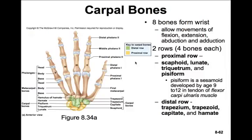There are eight different bones that form the wrist, allowing movements of flexion, extension, abduction, and adduction. There are two rows, each having four bones. The proximal row, moving from the thumb side across, contains the scaphoid, the lunate, the triquetrum, and the pisiform. The distal row, from the thumb side across, contains the trapezium, the trapezoid, the capitate, and the hamate. You can almost palpate these bones in your wrist.